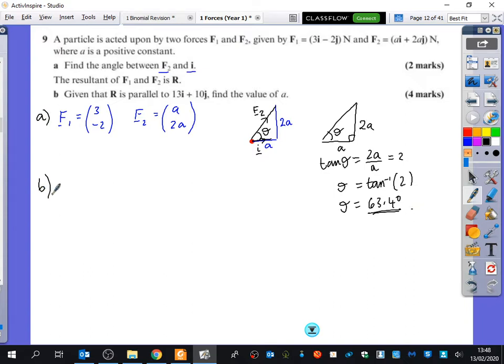Part B says the resultant of F1 and F2 is R. When we're doing vectors, how do we find a resultant? We add the forces. So the resultant is F1 plus F2. I'm going to find out what that is first. So the resultant is 3, minus 2, plus A, 2A, which is just 3 plus A, and then minus 2 plus 2A.